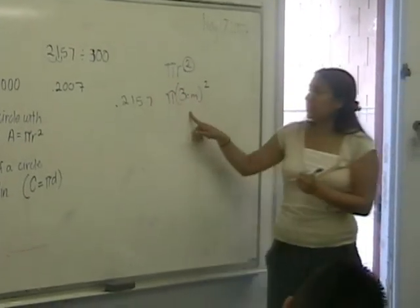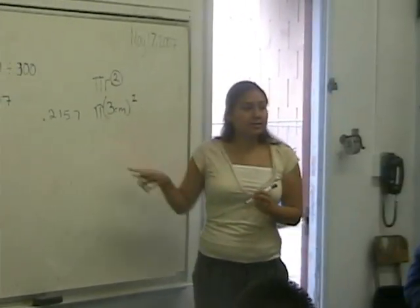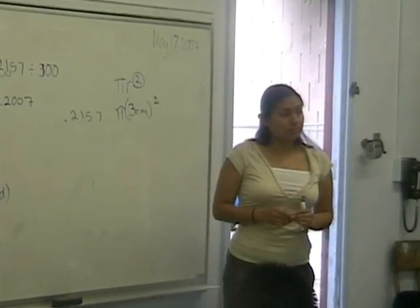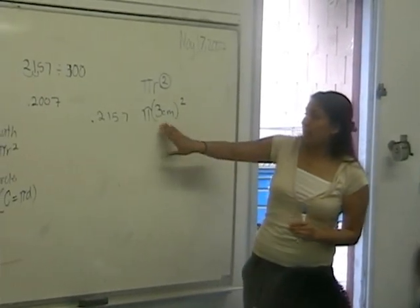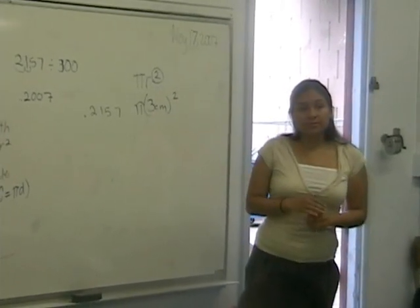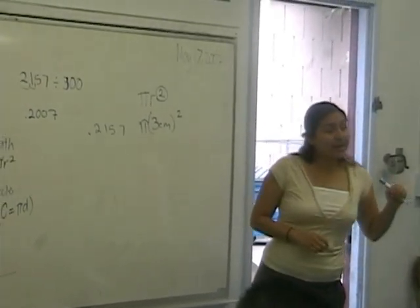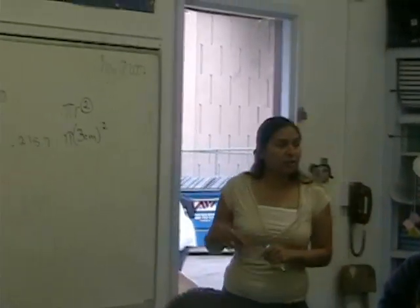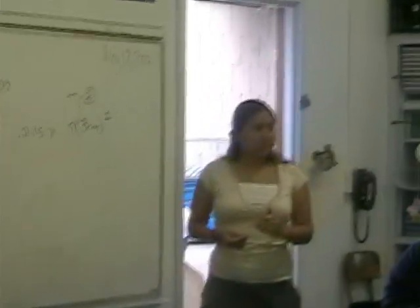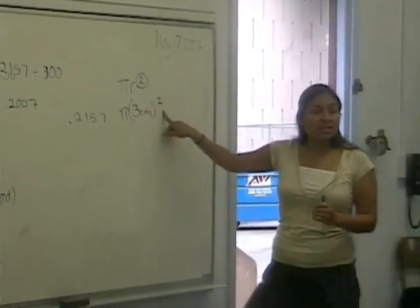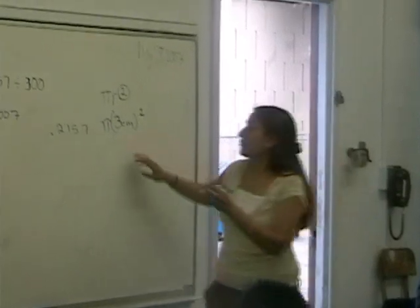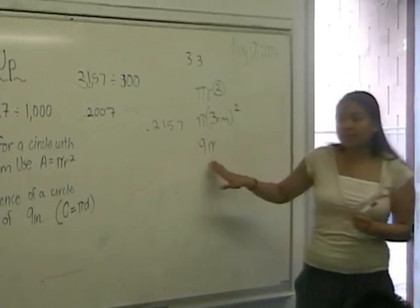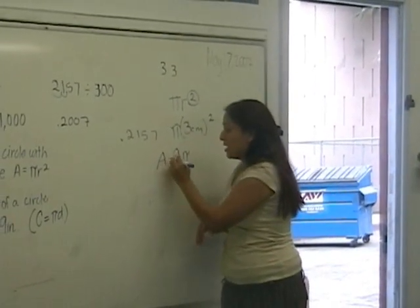So we have pi times three squared. How much is this part right here? If I square three, how much is that? Nine. Why did you say nine? Because you multiply three by three. Because remember, when you square something, you multiply it by itself — three times three. So you have nine pi. For our purposes, you can leave it at nine pi.